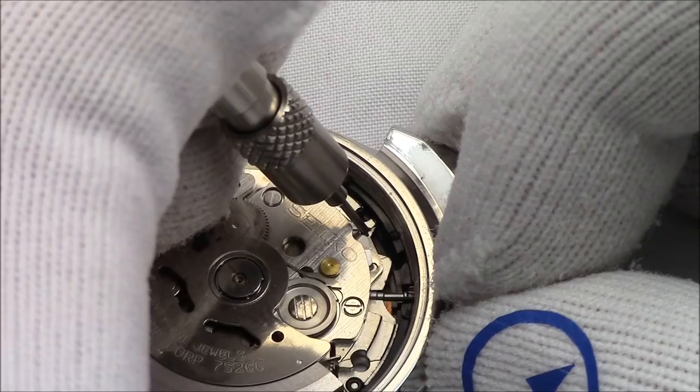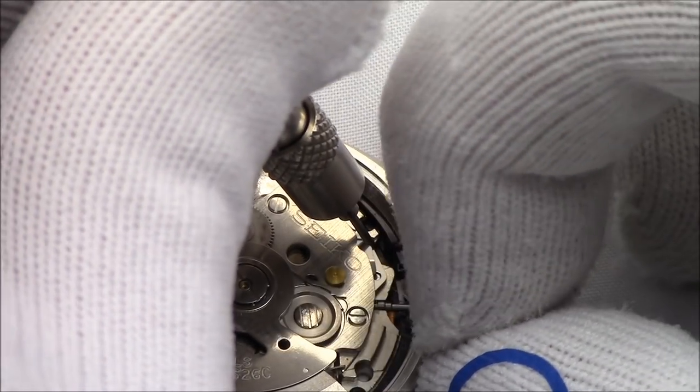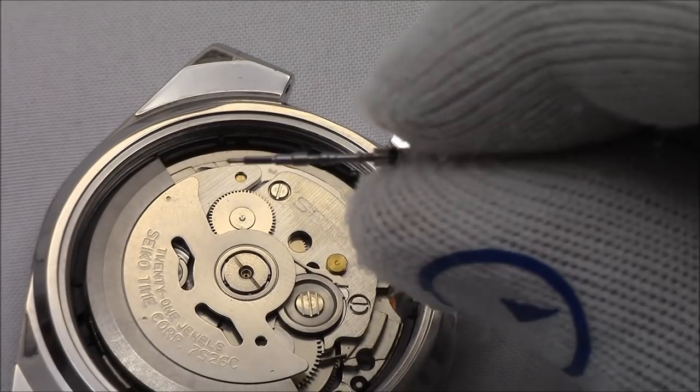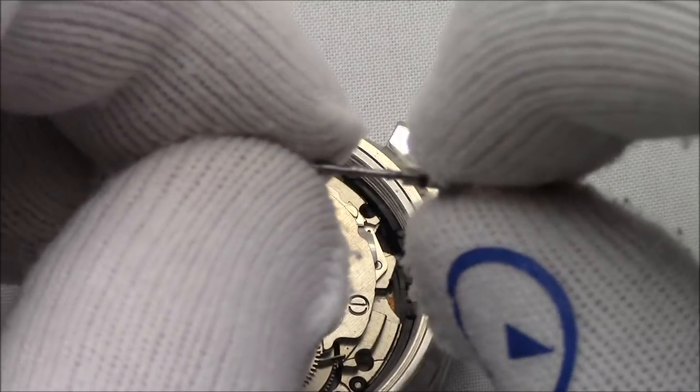It's not the easiest to do for the camera, but I take the tool, I press that little thing down, and out pops the crown and stem. That's it.